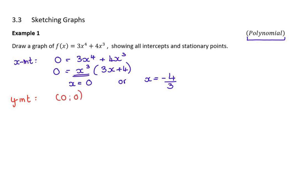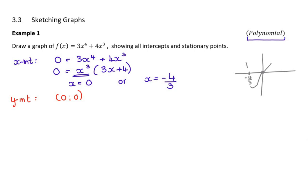So immediately I know — and I like to keep a little summary on the side — it's definitely going through the origin, and then minus four over three will be somewhere around about there. So it definitely needs to come down somehow and then turn there and go back up, and notice it doesn't come down again. There are no other turns, simply because there are only two intercepts. So this point at zero has to be where I go through it and keep going up.